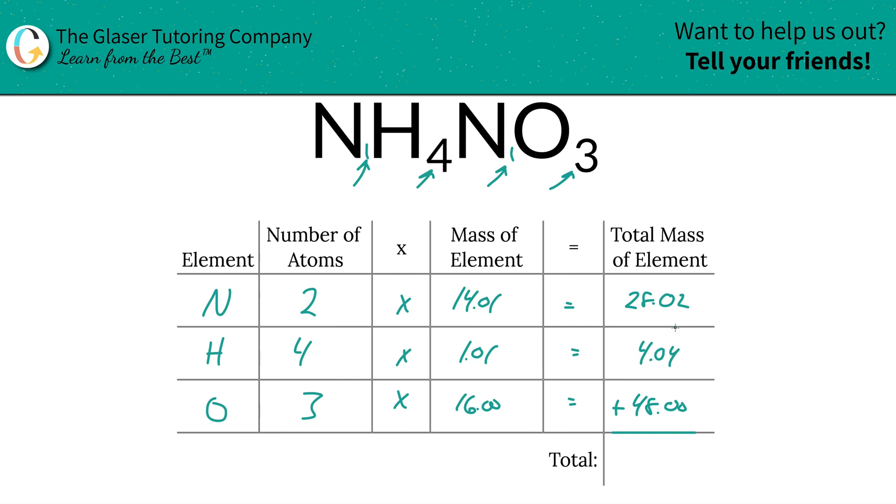And to find the total mass of the compound, we're literally just going to add this column up. So the total mass of this whole thing is going to be 80.06, and the units are AMU, atomic mass unit.